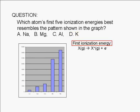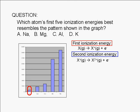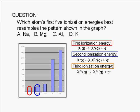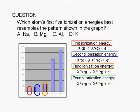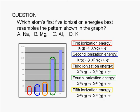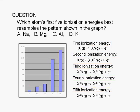First ionization energy refers to the energy needed to remove an electron from an atom. The second ionization energy refers to the energy needed to remove an electron after one electron has been removed. The third, fourth, and fifth ionization energies follow the same pattern. Note that the 1st through 5th ionization energies lead to the formation of cations with charges of positive 1, positive 2, positive 3, positive 4, and positive 5, respectively.